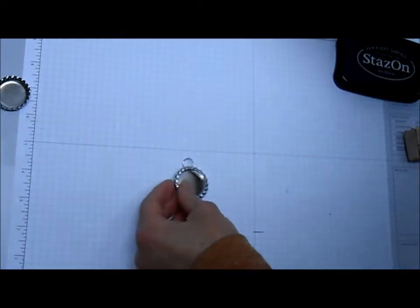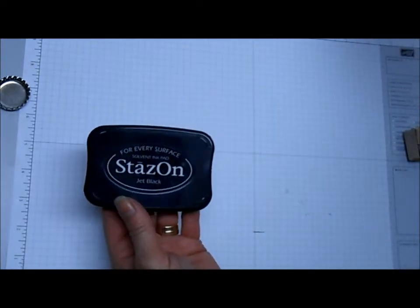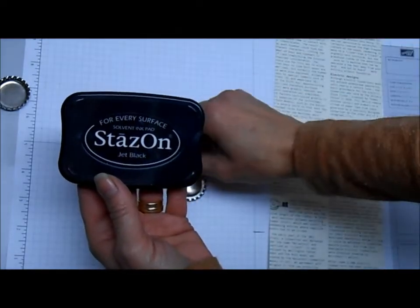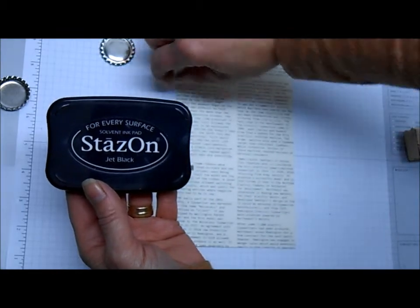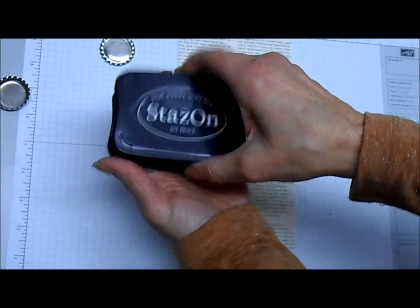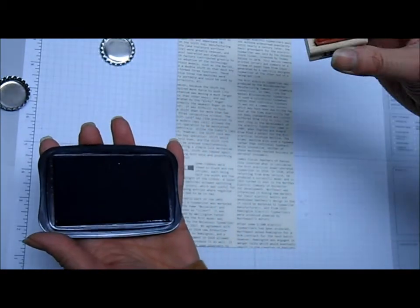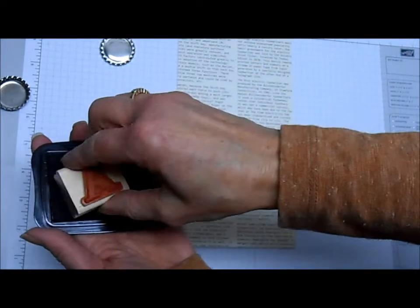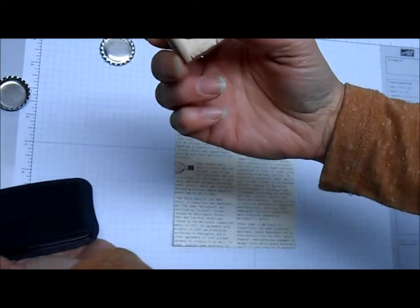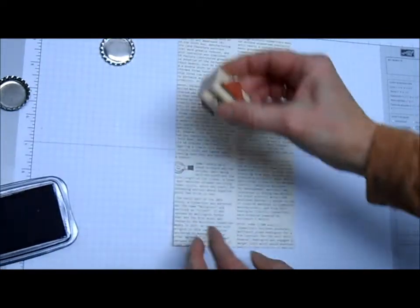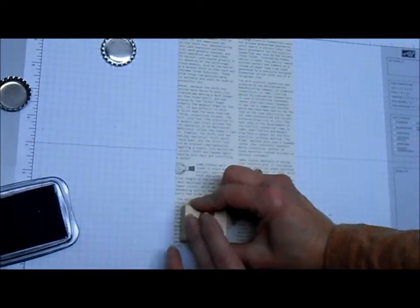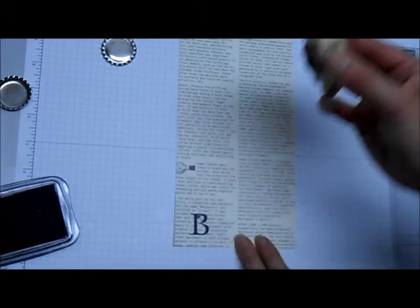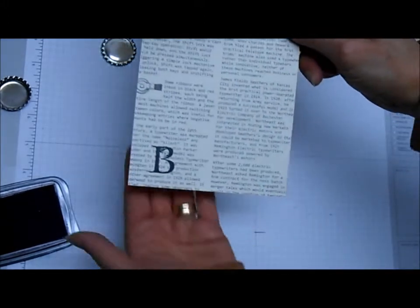My next step, and I like to use the Stazon ink, because when you're adding the crystal effects over the top, you get the best effect with the Stazon. Using our lovely letters alphabet, of course you're seeing it backwards, but I'm making one for a friend. My first initial is B, and so I'm going to stamp that on my paper. You get a nice crisp image.